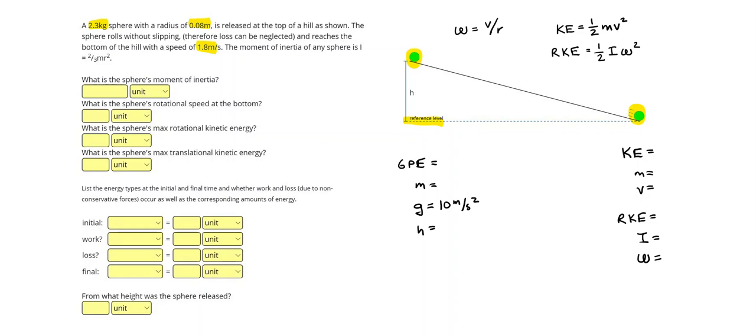Alright, so let's go ahead and start filling out some given. I'm going to switch pins. So we have a 2.3 kg sphere, I'm going to put that down as my mass, in both cases. And then this radius of 0.08 meters, I'm going to need this in just a second. So the radius is 0.08. And at the bottom of the hill, the speed of 1.8 meters per second, that's going to be my velocity. Remember that angular speed would be in radians per second.